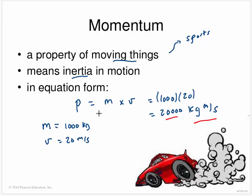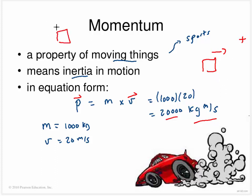One thing we have to pay attention to is that velocity is a vector, so momentum is also a vector. If an object moves in the positive direction, the momentum is positive. If the object moves in the negative direction, the momentum is negative. These positive and negative signs are going to be really important in this chapter.